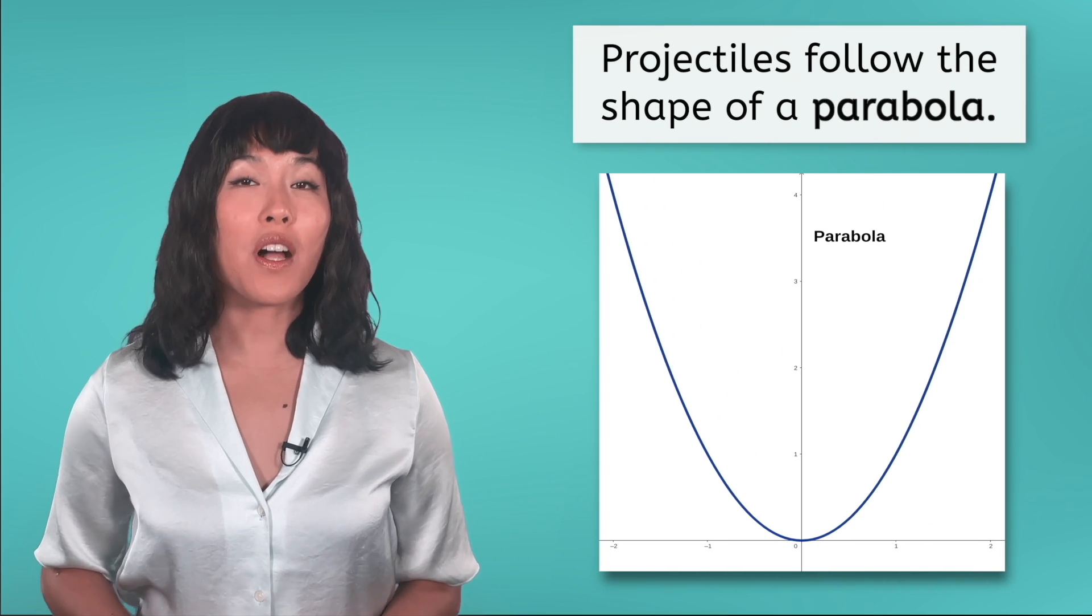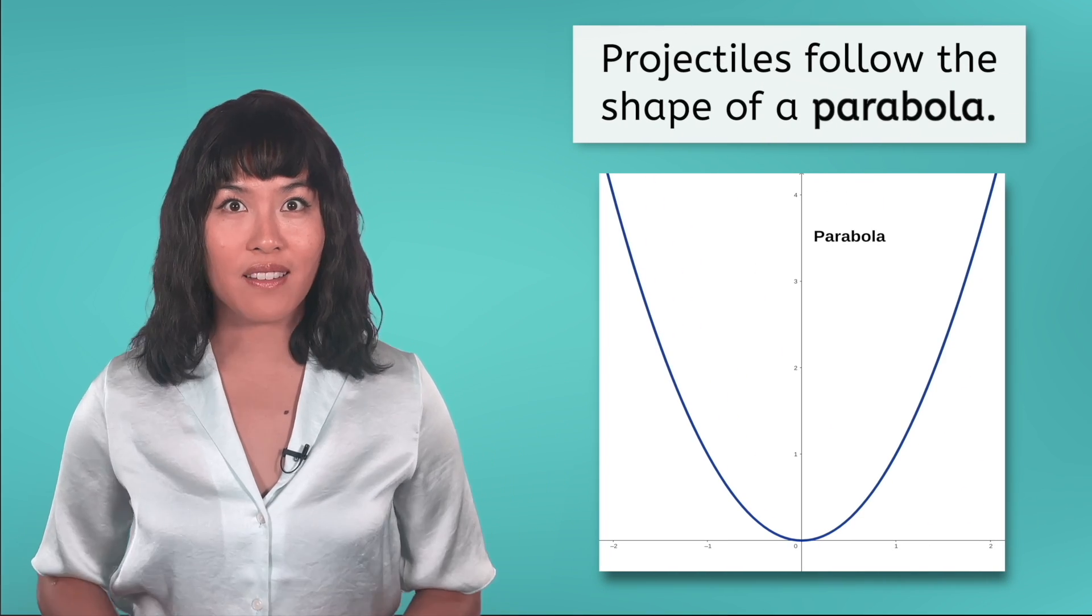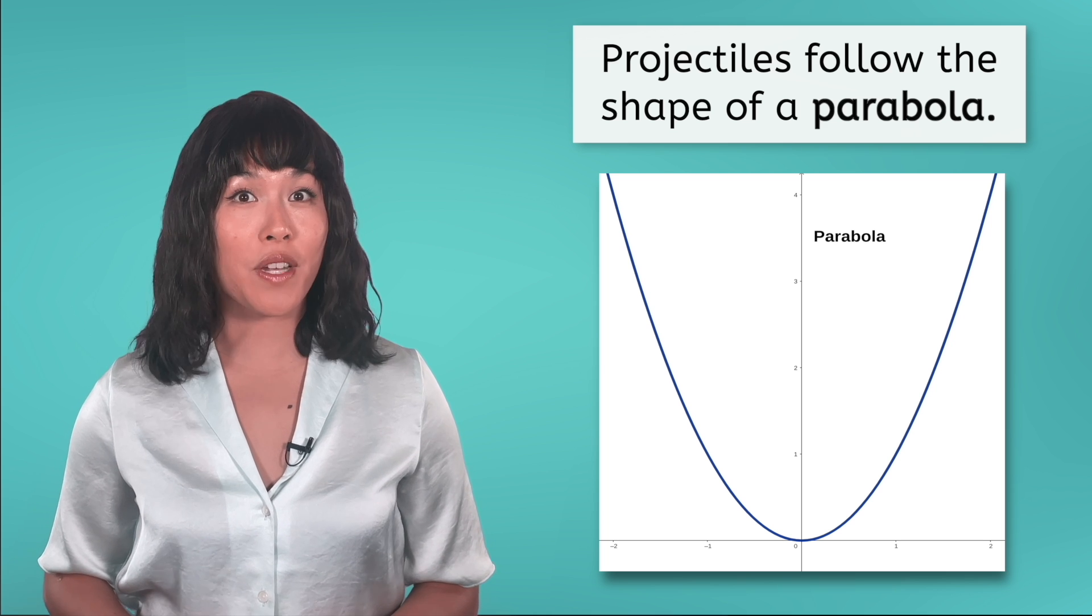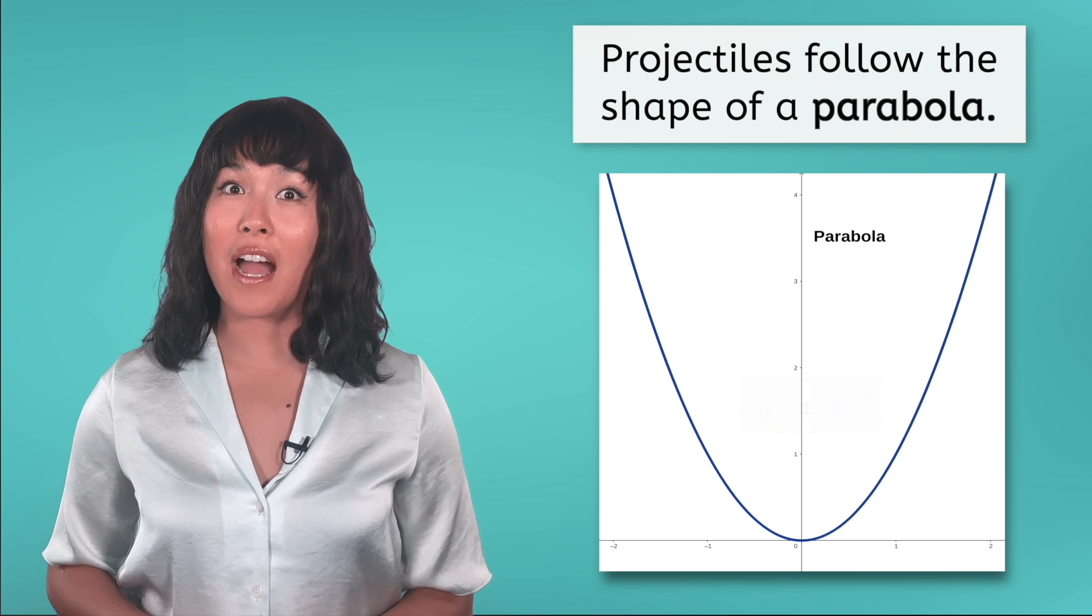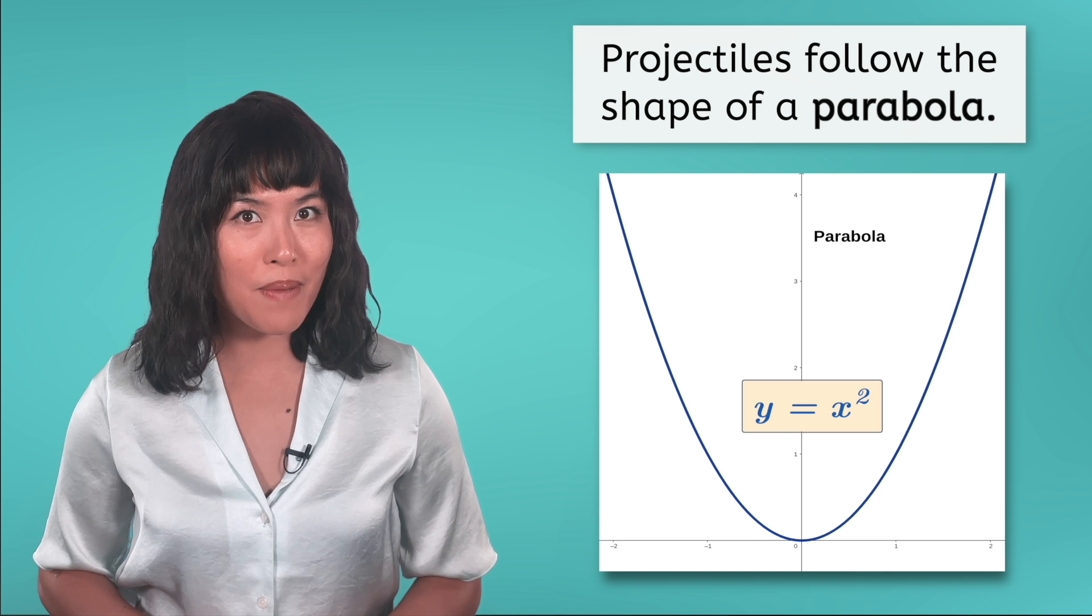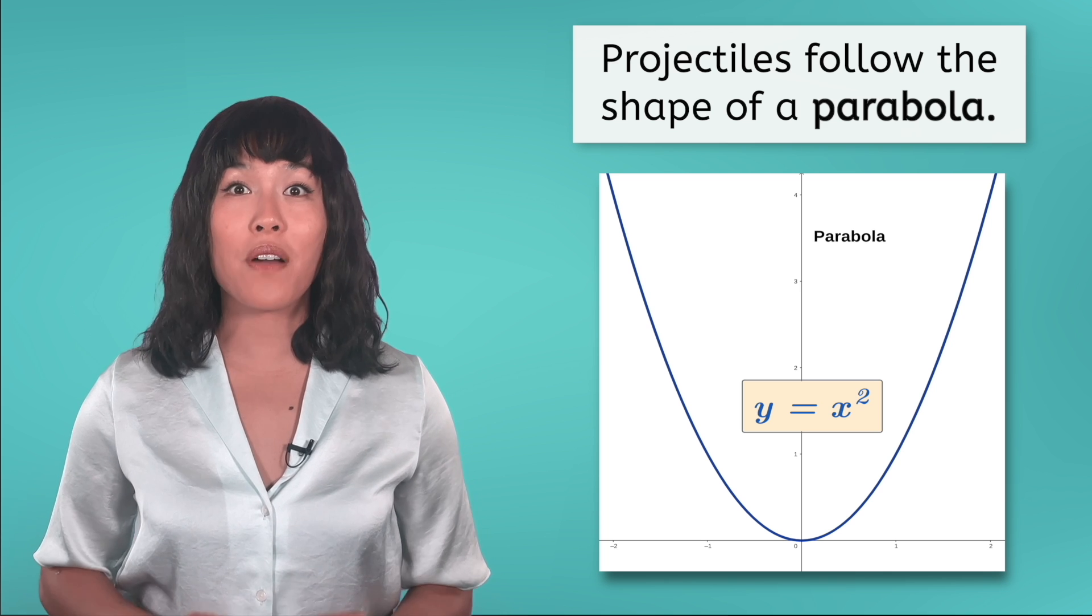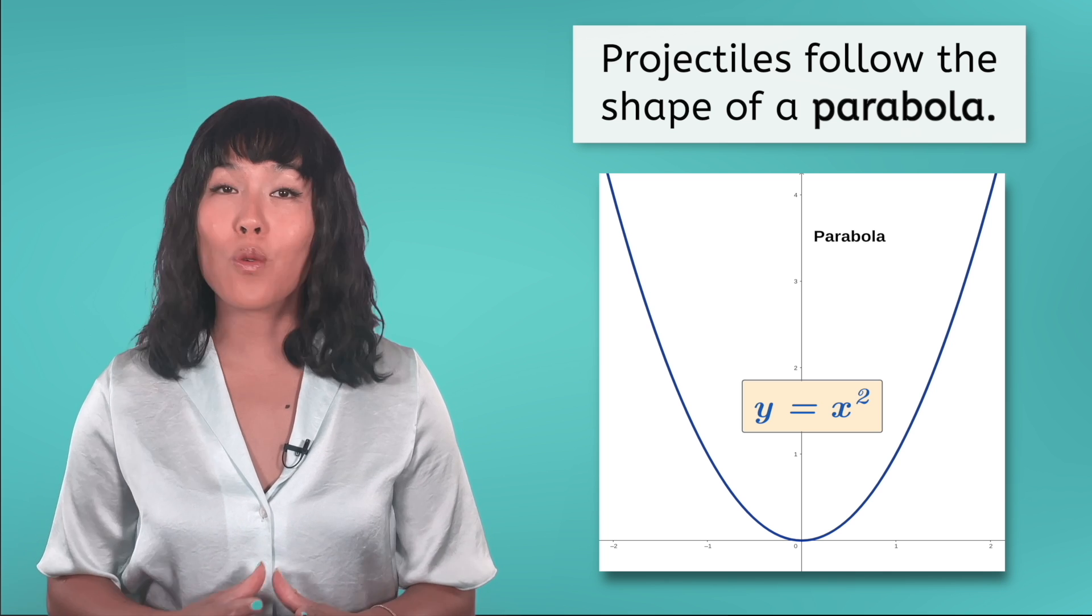If you've taken an algebra class already, the shapes of these trajectories may look familiar. Projectiles follow the shape of a parabola. Do you remember what type of equation forms a parabola on a graph? The most common way to make a parabola is with a form of the equation y equals x squared.